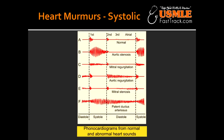Mitral regurgitation is also enhanced by conditions that increase left atrial return, such as expiration. Mitral regurgitation can occur due to ischemic heart disease, mitral valve prolapse, or left ventricle dilation.